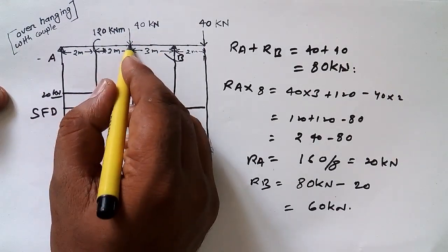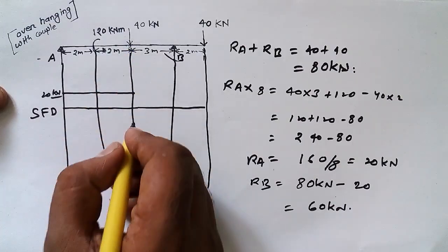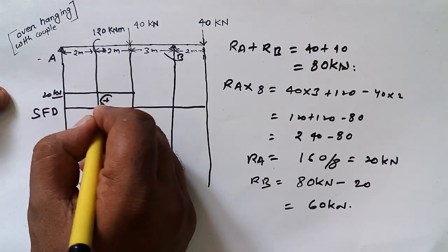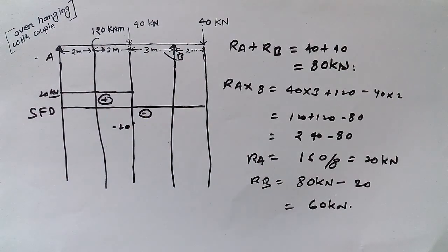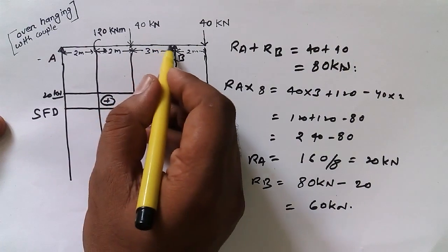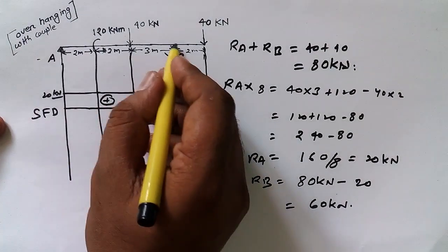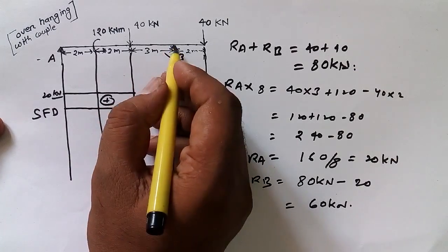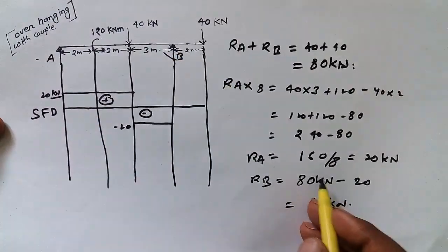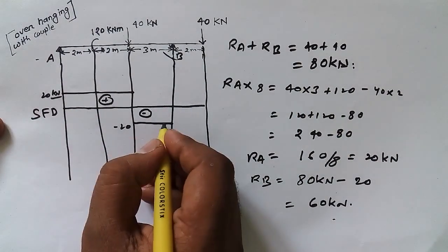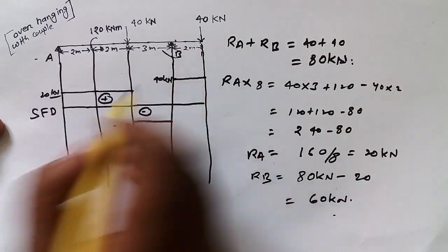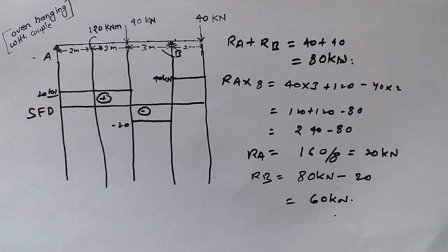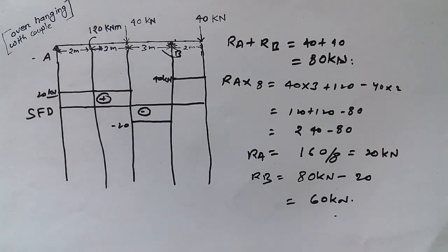We don't have any force from A to the point load, so we extend this line at 20 kN. At the point load of 40 kN, we have 20 minus 40, which gives minus 20. Below the reference line we are taking as positive and above as negative. Again, no load from here to B, so we extend the line. At B, the reaction force is 60 kN, so 20 minus 40 plus 60 gives 40 kilonewtons, and we extend this line to the end.